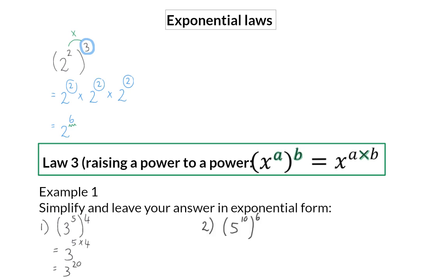In the second problem, we have 5 to the power of 10 to the power of 6. So when I use my law and multiply these two exponents, I have 10 times 6, which will give me 5 to the power of 60.